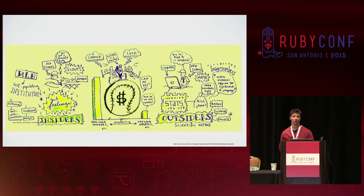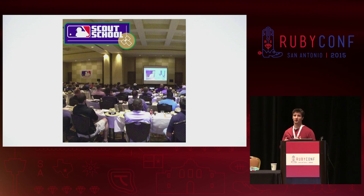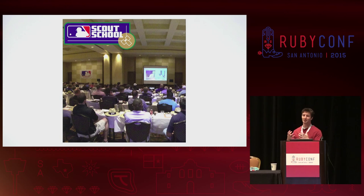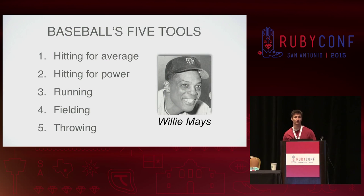Moneyball gives us an objective, data-driven, detached view — but it's not perfect because humans are complicated. So let's turn to a more humanistic approach by heading to Scout School together. Scout School is a very real thing, sponsored by Major League Baseball. I was lucky enough to attend in 2005 — you have to be invited by a team. You spend two weeks going over the theory of scouting in the mornings and applying what you learned in the field in the afternoons. The first thing you learn is that all players are evaluated in five categories called tools: hitting for average, hitting for power, running, fielding, and throwing.